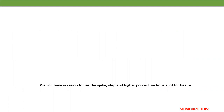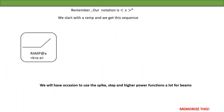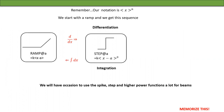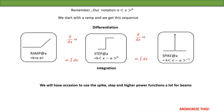We will have occasion to use the spike, step, and higher-power functions a lot for beams. The ramp function is k⟨x−a⟩^1. Differentiate it and you get the step function k⟨x−a⟩^0. Integrate and you go back to the ramp. Differentiate the step and you get the spike ⟨x−a⟩^(−1). This relationship is very useful — remember and memorize it.